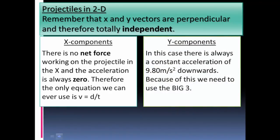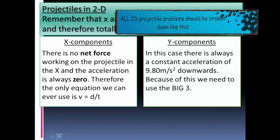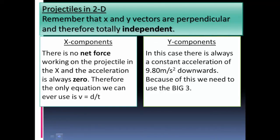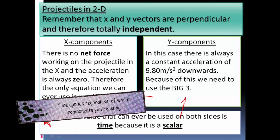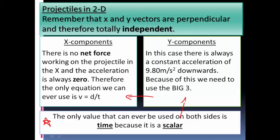In the y components, however, there is always an acceleration — the acceleration due to gravity at negative 9.8 meters per second squared downward. Because of that, we are pushed towards the big three kinematics equations, since that's all accelerated motion. These two ideas are independent of each other, yet we need the y components to solve for the x components. The only value that can be used on both sides is time, because it's a scalar. So in most cases, find time from y, then plug it into x.